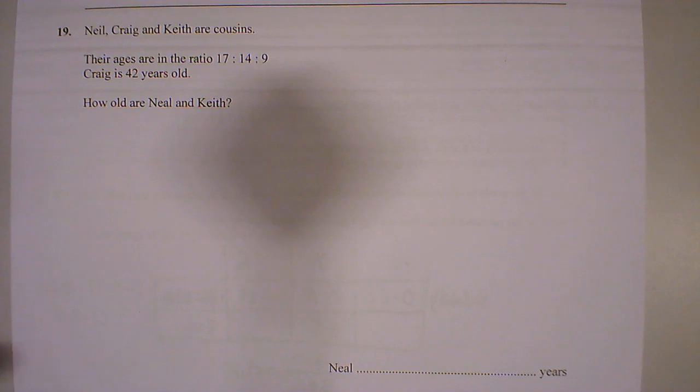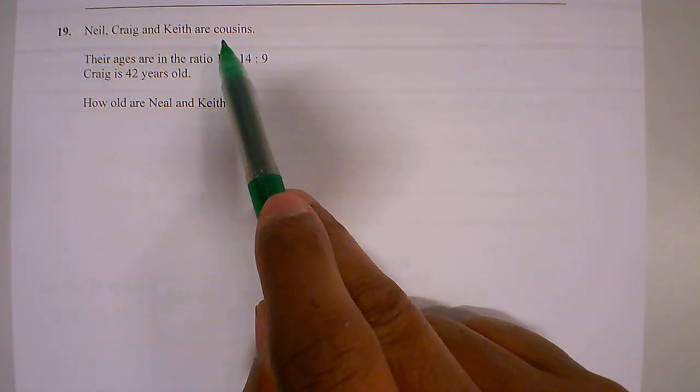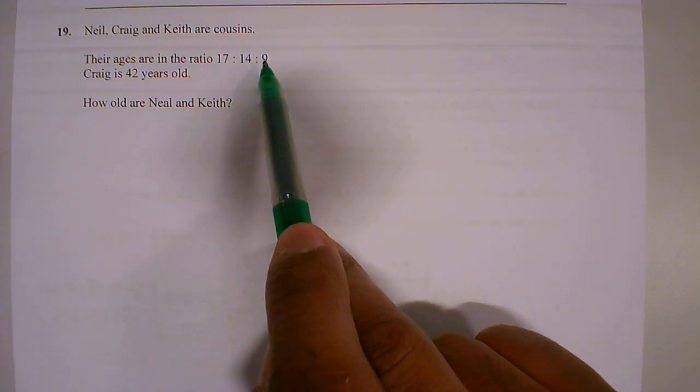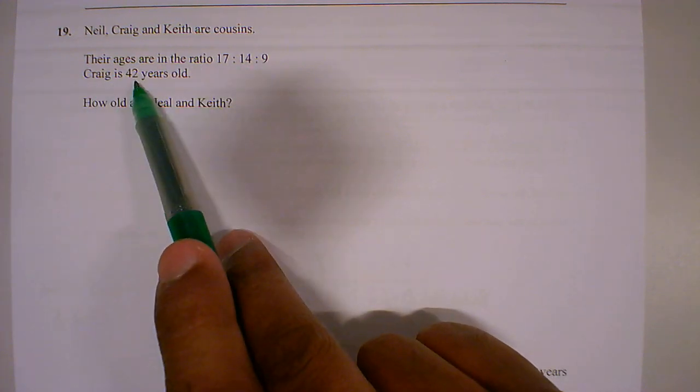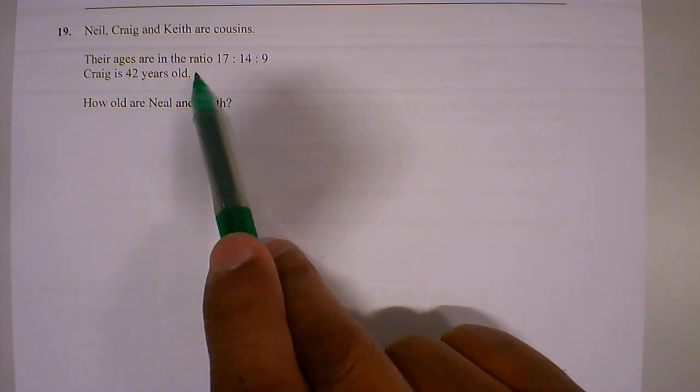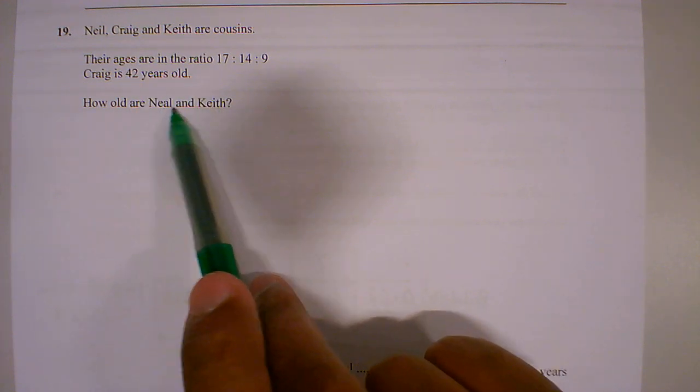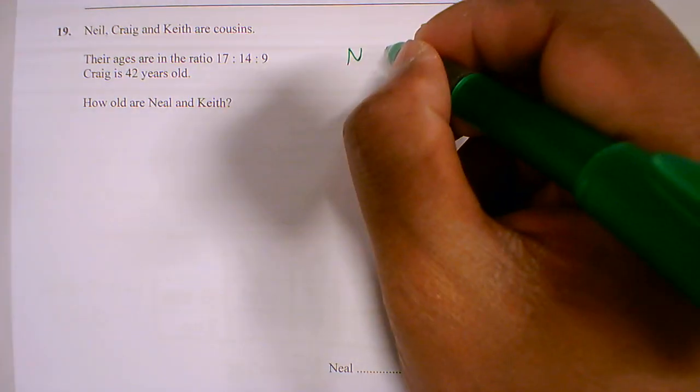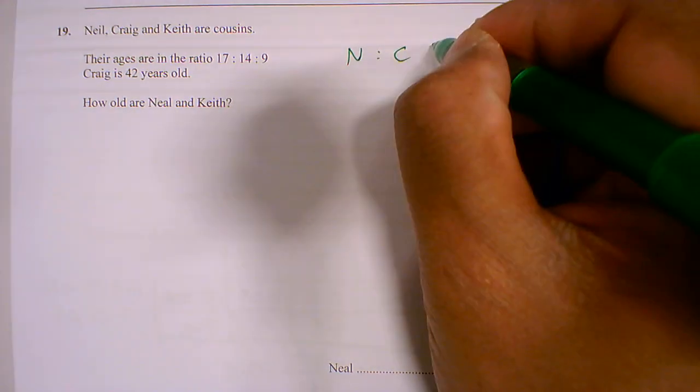So let's look at this question. Neil, Craig, and Keith are cousins. Their ages are in the ratio 17:14:9. Craig is 42 years old. How old are Neil and Keith? So I've got Neil, Craig, and Keith.